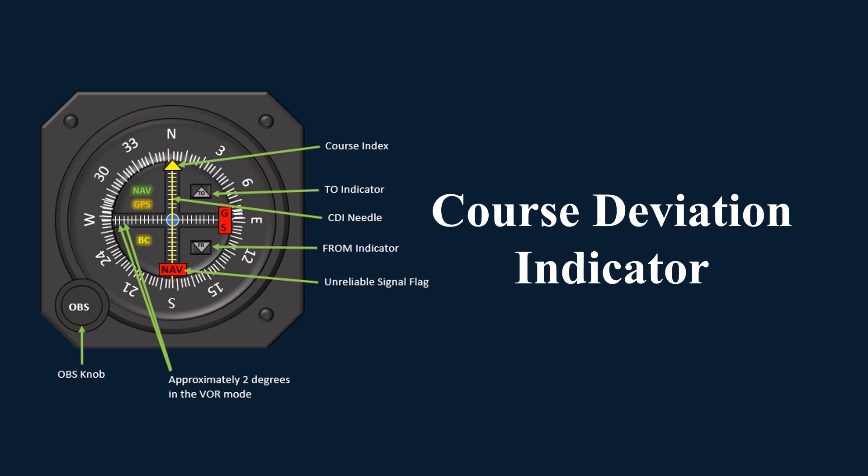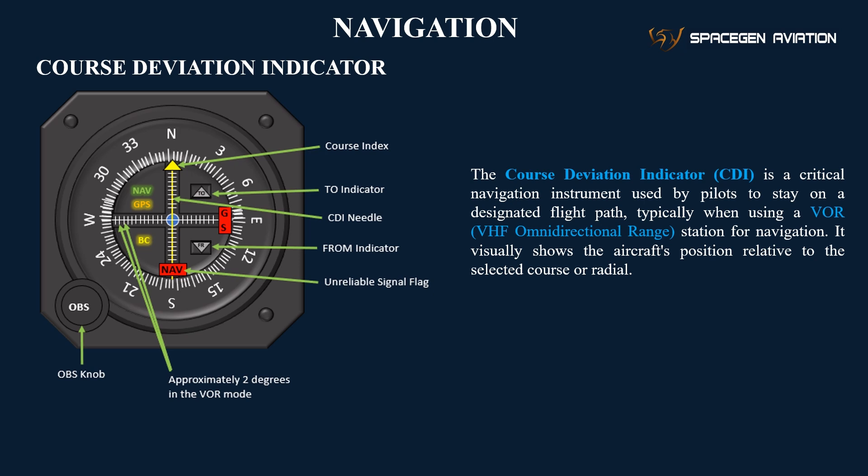The Course Deviation Indicator, CDI, is an essential navigation instrument that helps pilots determine their position relative to a selected course and make corrections to stay on track. It is widely used with VOR, or VHF Omnidirectional Range, systems for precise navigation.